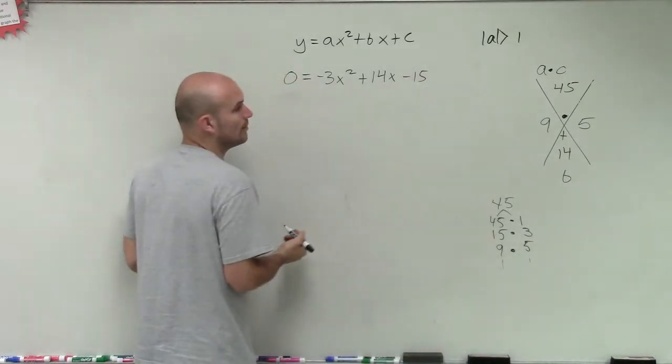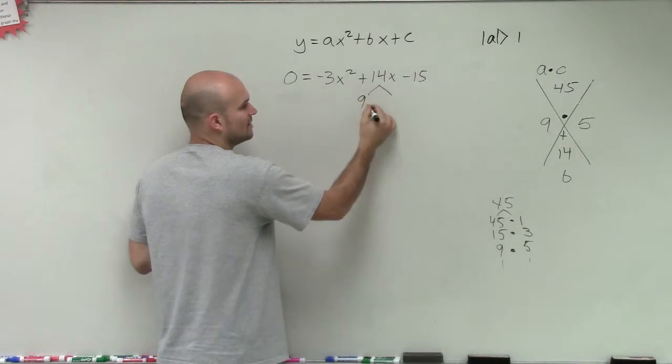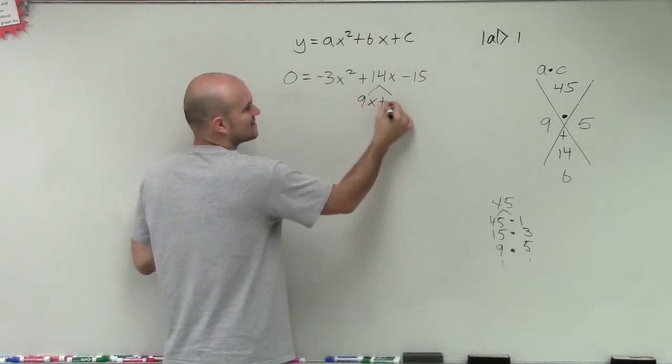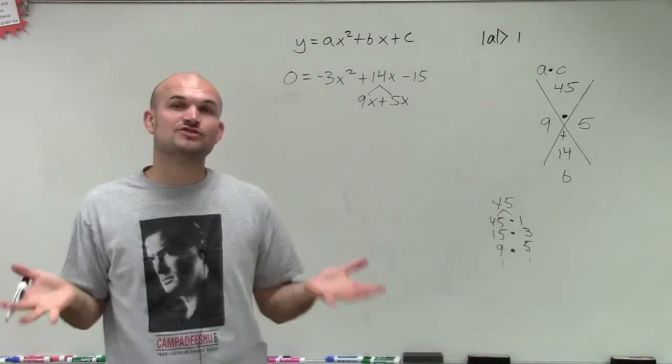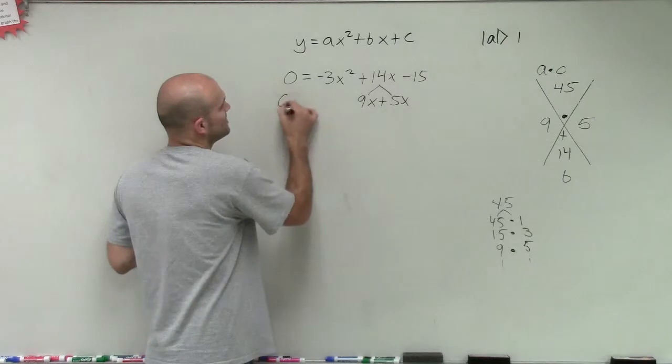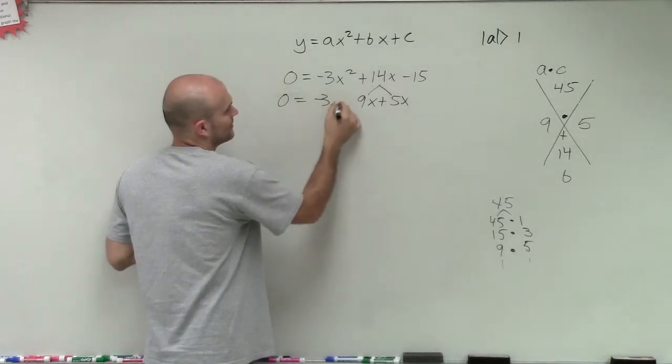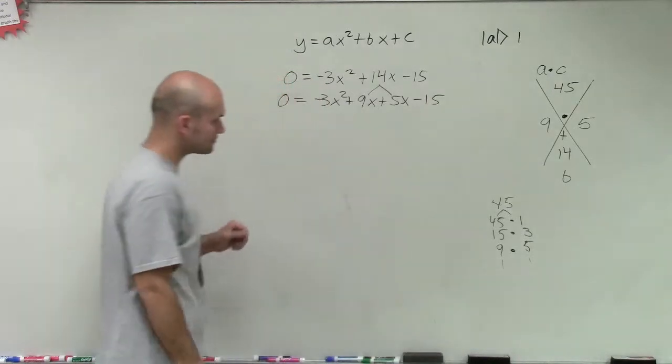We're still going to use the 9 and the 5, but what we're going to use the 9 and the 5 for is to rewrite our 14x. So we're going to rewrite 14x as 9x plus 5x. So I'm not changing my problem, I'm just rewriting 14x as 9x plus 5x, and then the rest of the equation remains the same.